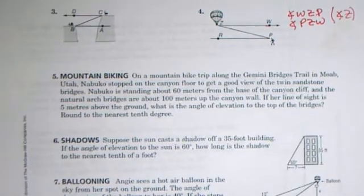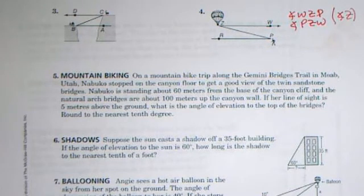Let's look at the mountain biking which is number five on this page. The understanding part is to just read through the problem and ask yourself what they're asking to do. Nabucco stops on the floor, he's looking at the twin sandstone bridges. He's about 60 meters from the base of the cliff and the arches are about 100 meters up the canyon wall. If her line of sight is five meters above the ground, what's the angle of elevation? They want us to round to the nearest tenth.